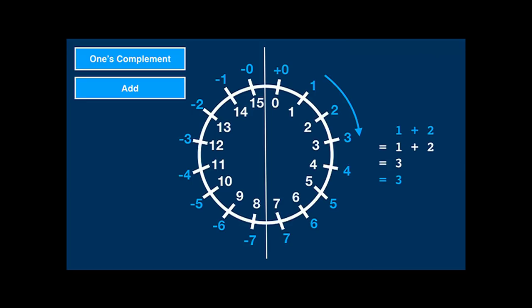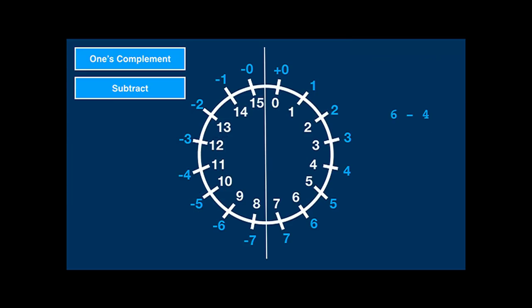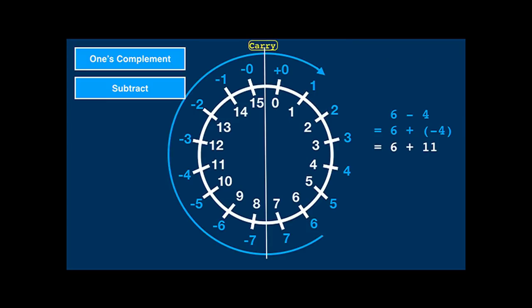Addition in the positive space is equivalent to the unsigned version. It gets interesting on a zero transition: signed 6 minus 4 is 6 plus minus 4, which is unsigned 6 plus 11, which in modulus 16 is 1 — we have a carry. In one's complement, a carry needs to be added to the end result, so we get 2, which is correct. The trick of jumping over the duplicate zero on a zero transition by adding the carry is called the end-around carry.